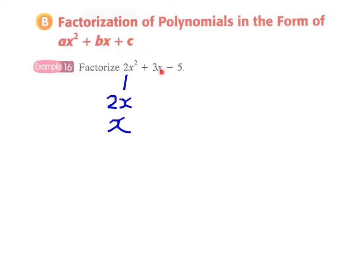Okay, let's see the last term. We have -5 here, therefore it can be either -1 times +5 or +1 times -5. If we cross multiply these factors, we will have a total number